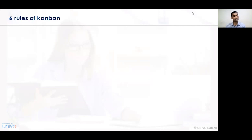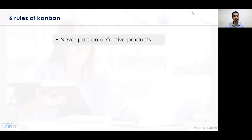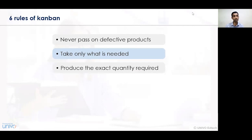The six rules of Kanban are: number one, never pass on a defective product — whenever there is a defective product or activity, we must not pass that particular activity. Number two, take only what is needed — only those activities which are of importance and necessary for completion should be undertaken. Number three, produce the exact quantity required — we must only manufacture the quantity which has been required as per demand and supply.